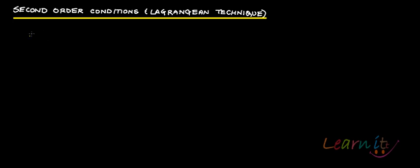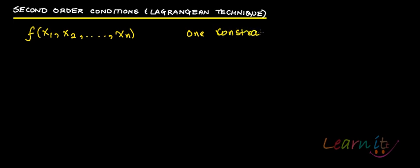Suppose you have an n-variable function f, which depends on x1 through xn, and there is one constraint g(x1, ..., xn) = b. What you do is form the bordered Hessian. The bordered Hessian matrix of the Lagrangian function is one where the bordered elements are the first-order partial derivatives of the constraint g.